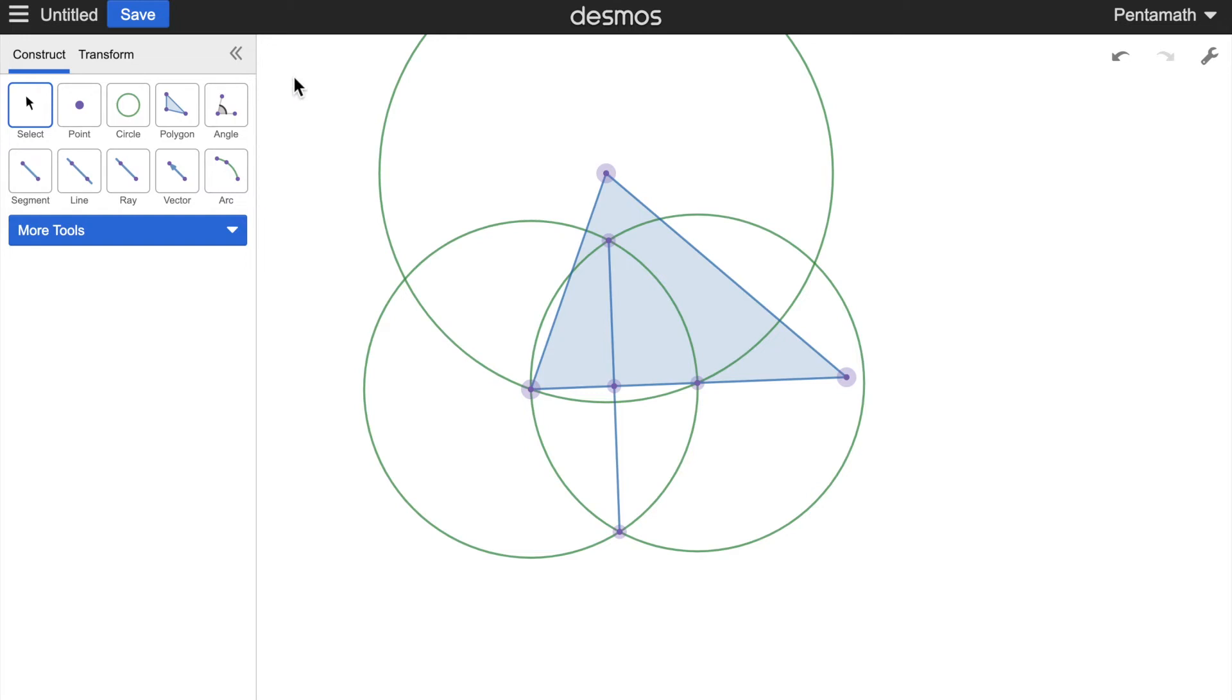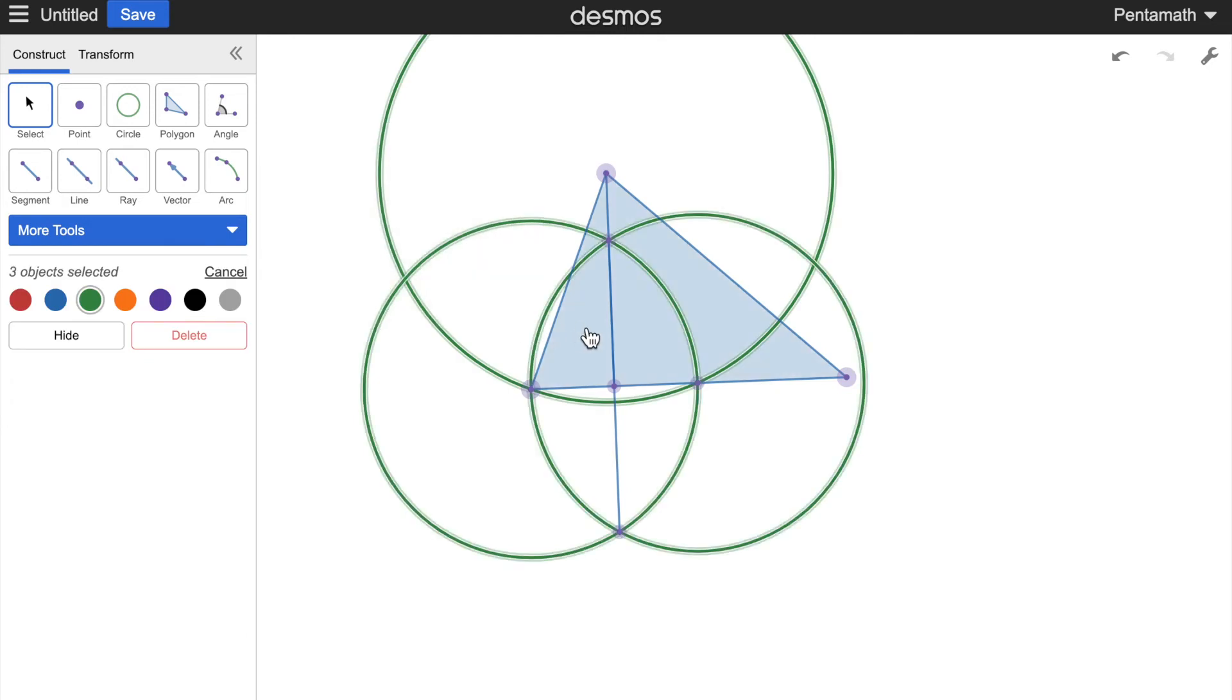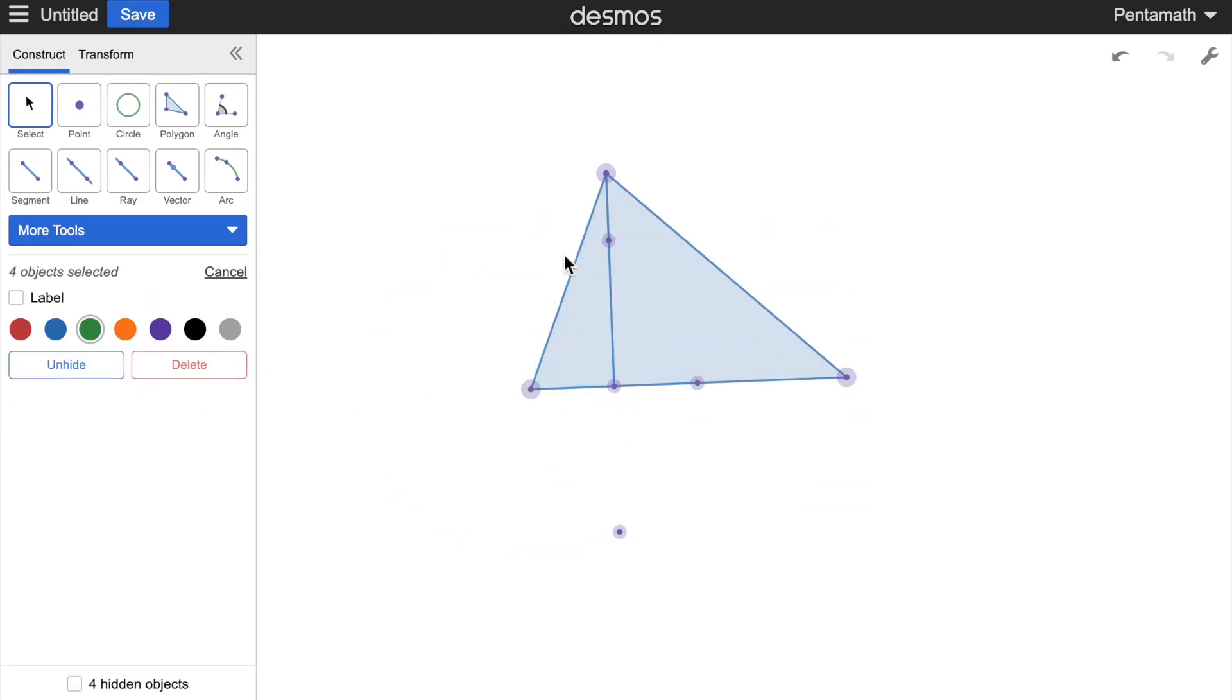Once you've done that, you get this point and all you have to do is now connect it to the opposite vertex. Now that is the altitude. Which means that now we can hide everything that we used to construct it.